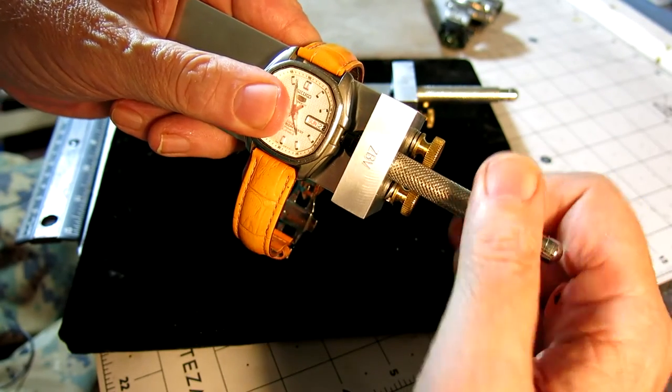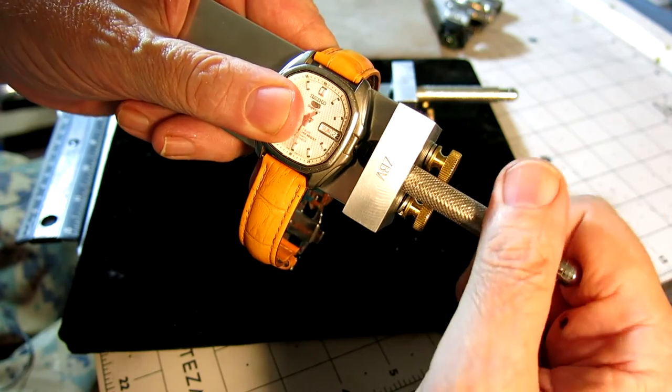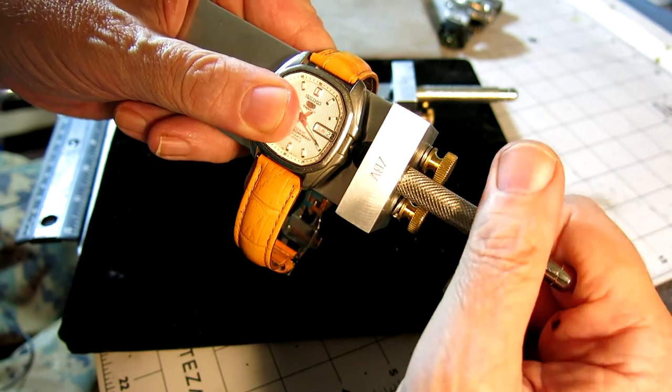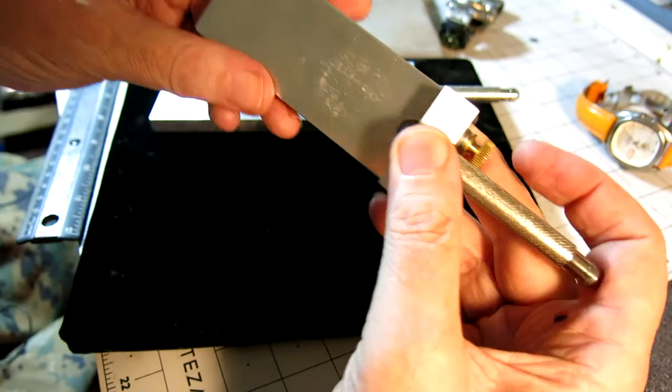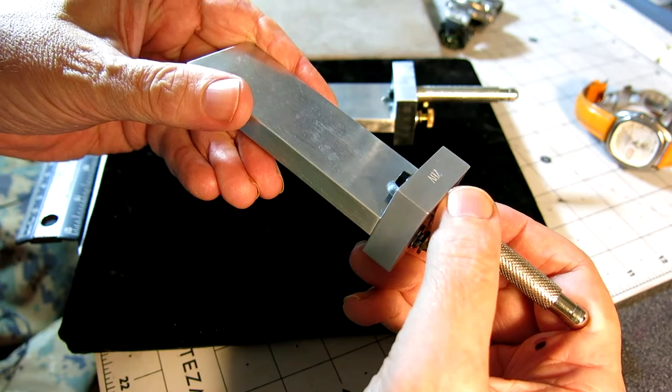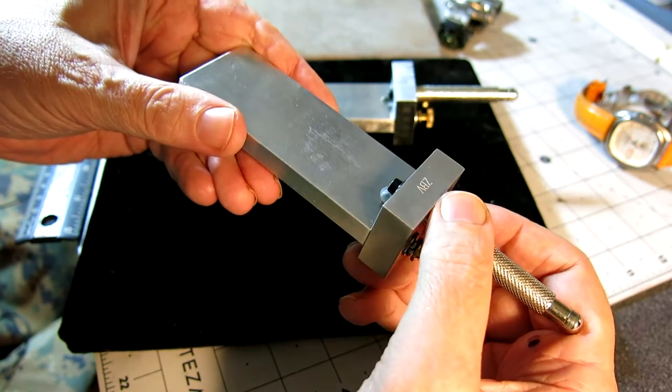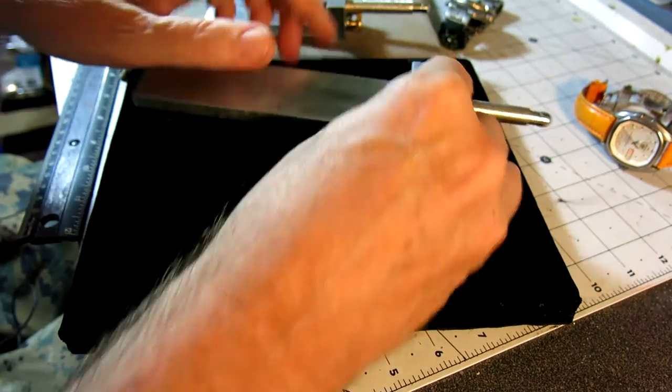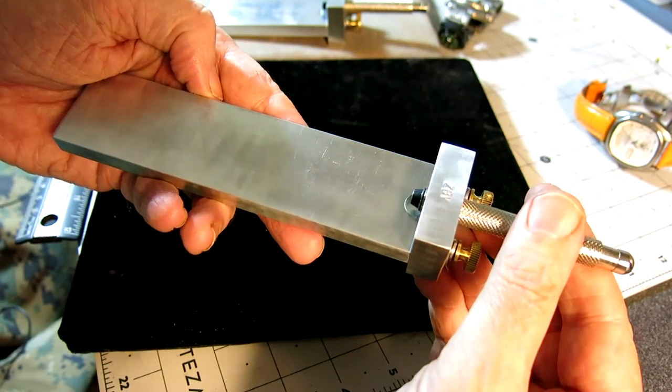Once you got it set up, this is a Seiko, and this is the smaller, more portable version - ZBV 05 SB, which stands for short bed. This is the longer version, more of a home shop version, a little less portable.